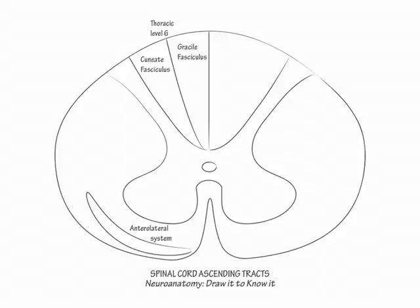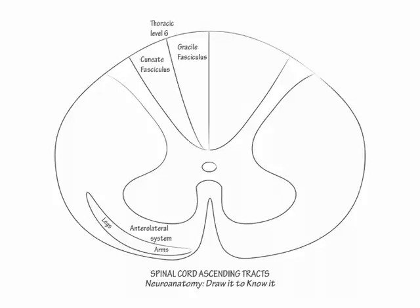Anterior spinal artery ischemia affects the anterolateral system fibers, but not the posterior column fibers, because it affects only the anterior two-thirds of the cord. Now label the somatotopic organization of the anterolateral system: the arms are medial and the legs are lateral, which is the same somatotopic organization as the descending corticospinal tracts.